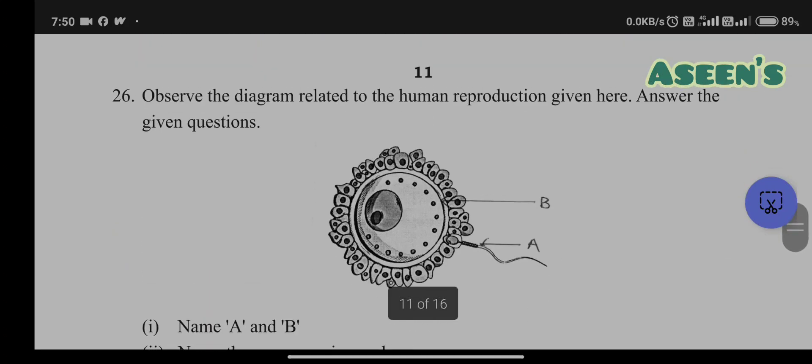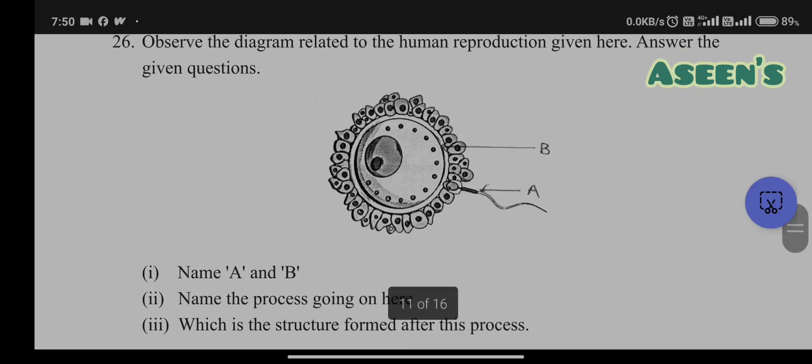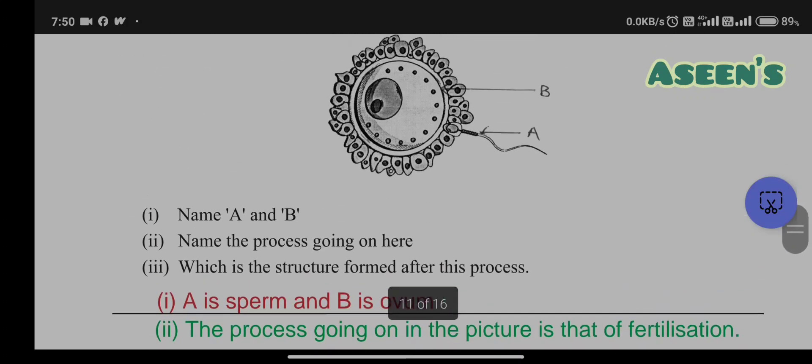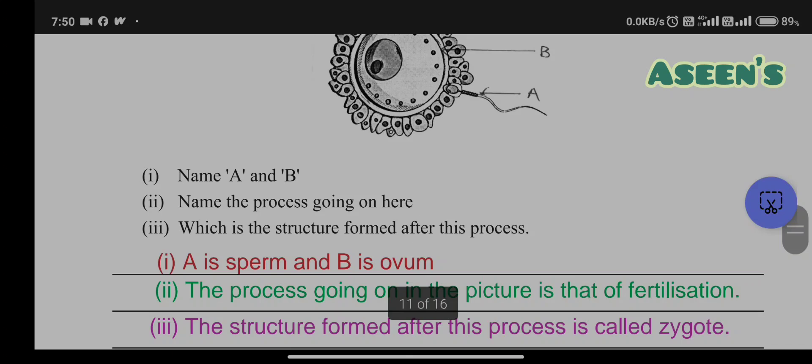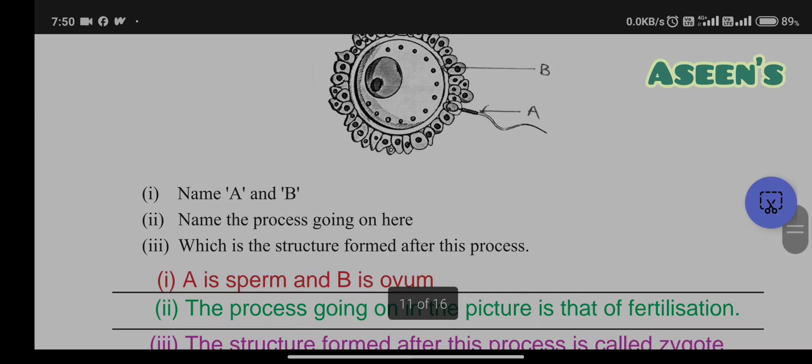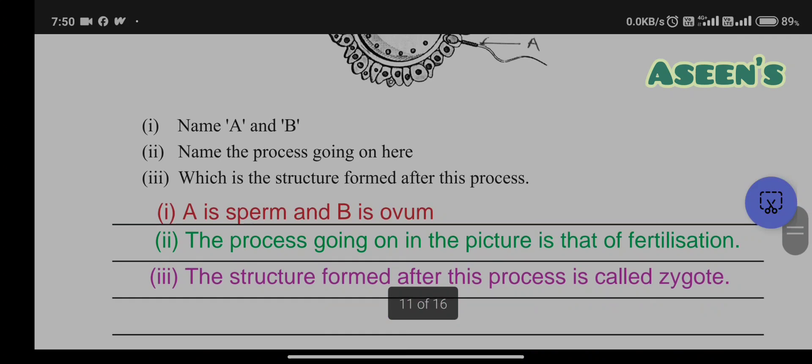Observe the diagram related to human reproduction given here. Answer the questions. They have given you A and B. Name A and B: A is sperm and B is ovum. Name the process going on here: the process is fertilization. Which structure is formed after this process? After fertilization of male and female gametes we get zygote.